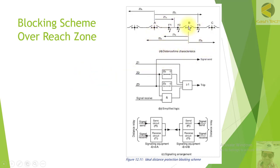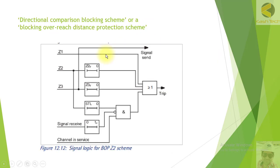The advantage of this scheme is that even if communication fails, the relay at station A can still trip immediately. This is the key benefit of the simple blocking scheme.